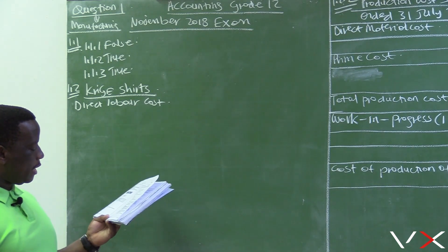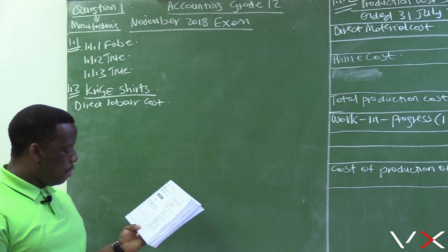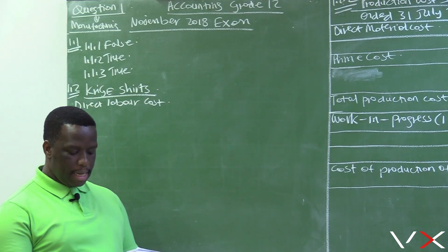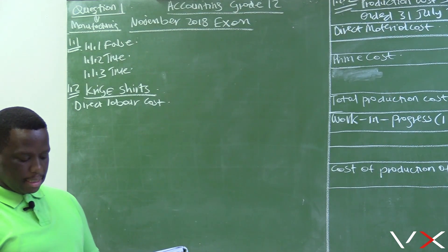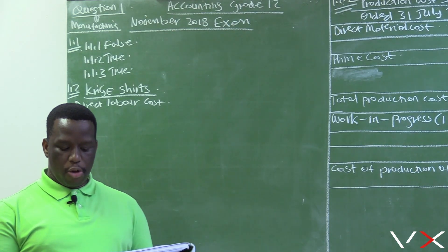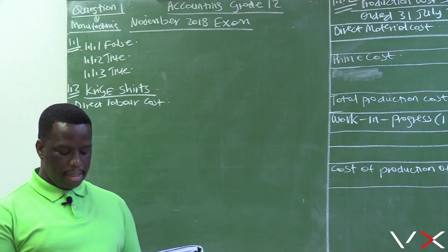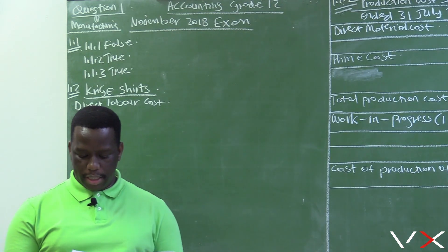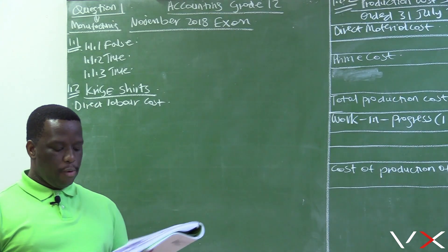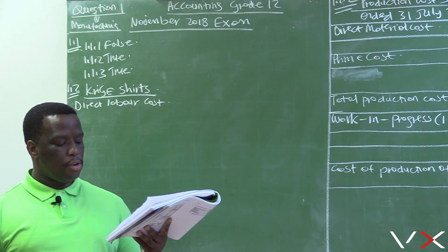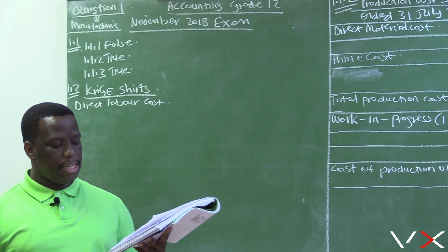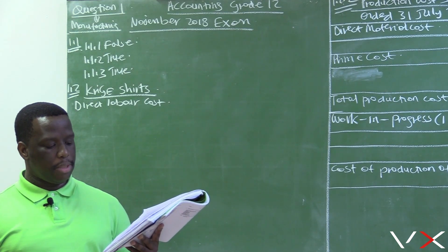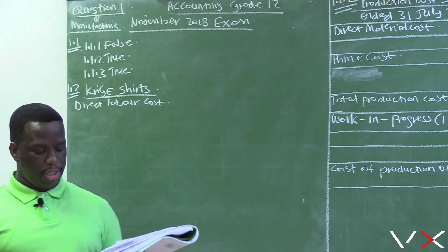The number of workers in this business is 4. The normal time expected per worker per year is 1,960 hours, and the normal rate per hour is 90 rand. Bonuses to workers are 12% of the normal wages. Note that one worker worked only 1,680 hours and received a reduced bonus of 12,146.